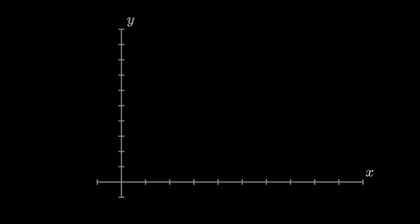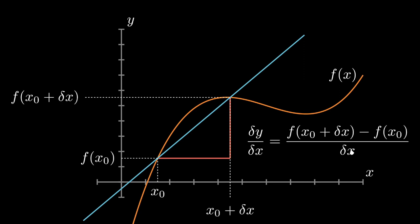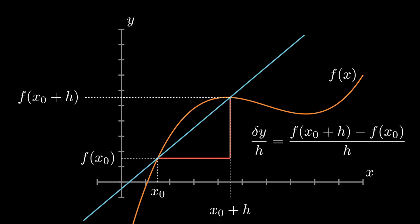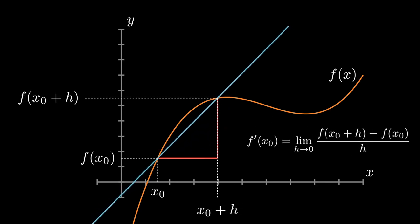As our starting point, let's recall the idea of the derivative as the limit of the difference quotient. Here we have a secant line defined between a point and a nearby point, and then we move those points together until we get a tangent line. And the slope of that tangent line is, of course, the derivative.